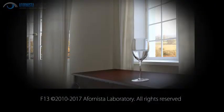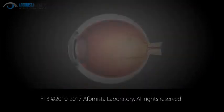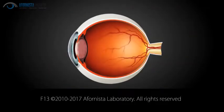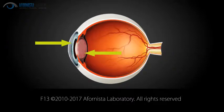Abbe value refers to the clarity of transparent materials. Theoretically, perfect transparency is 100 on the Abbe scale, but because light travels through both the cornea and the crystalline lens, the Abbe value of the eye is between 45 and 50.